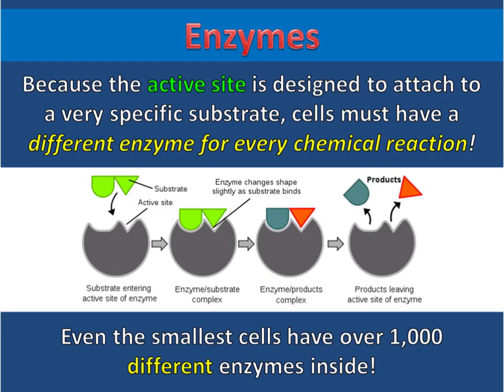Because the active site is designed to attach to a very specific substrate, cells must have a different enzyme for every chemical reaction. Even the smallest cells have over 1,000 different enzymes inside, and all of those different enzymes do all of the different chemical reactions that cells need to stay alive.